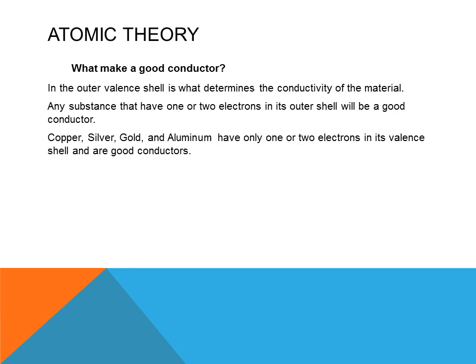What makes a good conductor? The outer valence shell is what determines the conductivity of the material. Any substance that has one or two electrons in its outer shell will be a good conductor. Copper, silver, gold, and aluminum have only one or two electrons in their valence shell and are very good conductors.